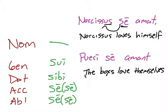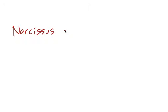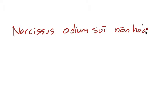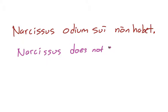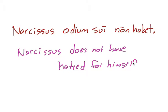Those were two accusative examples. Let's give some other examples. Using Narcissus again: Odium sui non habet — 'Narcissus does not have hatred for himself.' Obviously, right? Here I used it as an objective genitive, which is usually how the genitive of the reflexive pronoun is used.